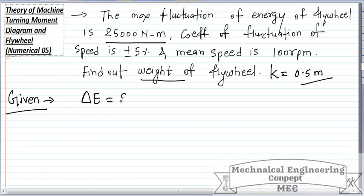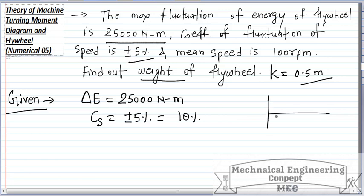Let's write what is given. Maximum fluctuation of energy, delta E, is 25,000 N-m. Coefficient of fluctuation of speed, Cs, is plus minus 5%. Since it's 5% above maximum and 5% for minimum, the total fluctuation will be 10%. This fluctuation from maximum to minimum is the delta E.